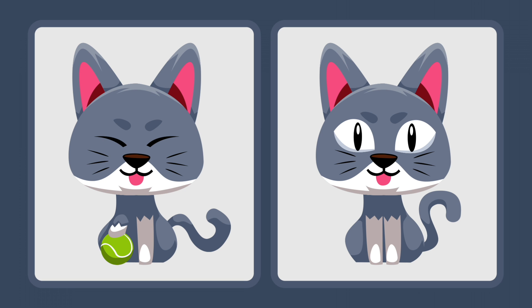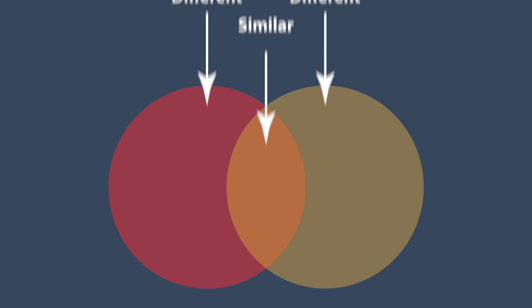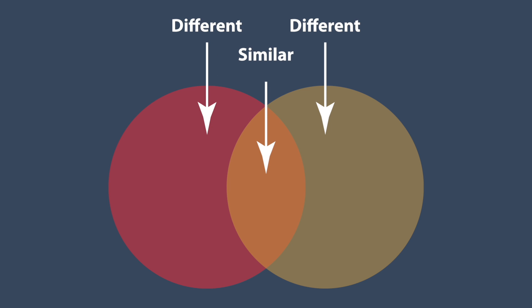So we can see that these cats have similar features and different ones. So how can we organize similarities and differences? We need to use a Venn Diagram. A Venn Diagram uses circles that overlap to show how things are similar and different.